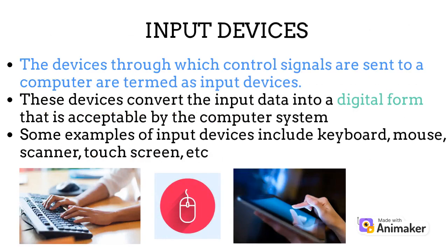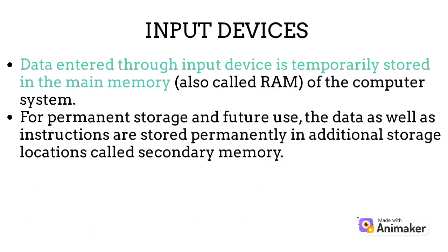The devices through which control signals are sent to a computer are termed as input devices. These devices convert the input data into a digital form that is acceptable by the computer system. Some examples of input devices include keyboard, mouse, scanner, touch screen, etc. Data entered through an input device is temporarily stored in the main memory, also called RAM, of the computer system. For permanent storage and future use, the data as well as instructions are stored permanently in additional storage locations called secondary memory.